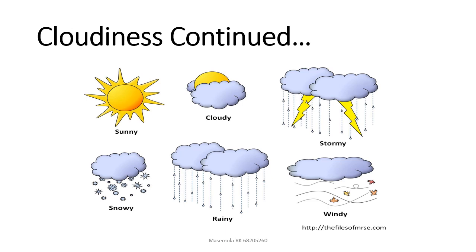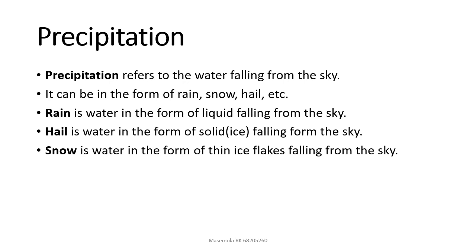This picture shows cloudiness. Sunday shows a clear sky day, then you have a cloudy day, and a stormy day where there will be thunder and all that — rainy days, rainfall. It can also be snowy or windy.